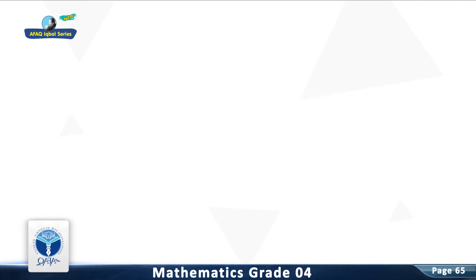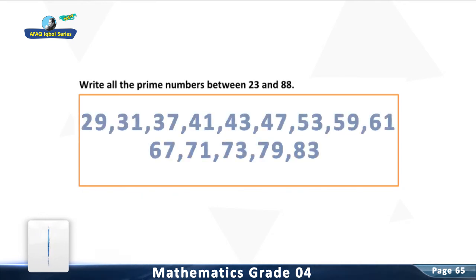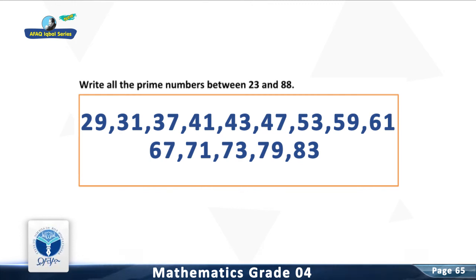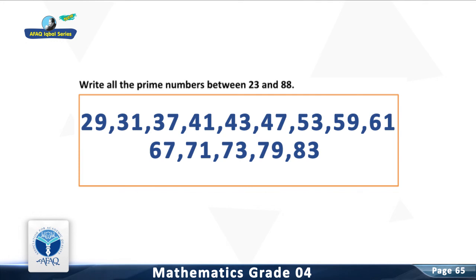Question 3: Write all the prime numbers between 23 and 88. You are right. The prime numbers between 23 and 88 are: 29, 31, 37, 41, 43, 47, 53, 59, 61, 67, 71, 73, 79, 83.